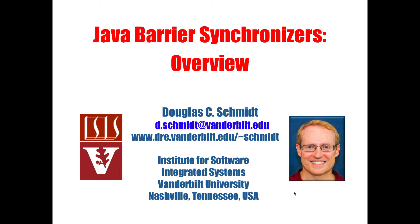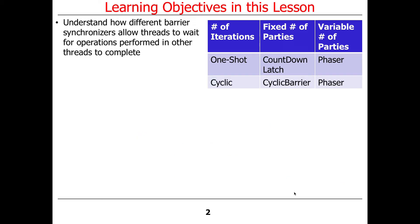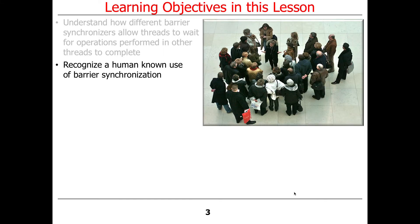The next topic we're going to focus on is barrier synchronizers. In this overview section, we'll talk about what the different barrier synchronizers are in Java and how they allow threads — or so-called parties — to wait for operations performed in other threads to complete. I'll give you a human-known use of barrier synchronization to make it more intuitive.